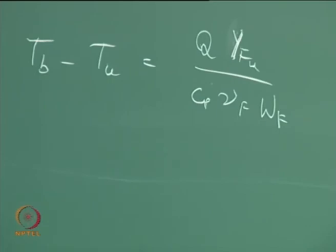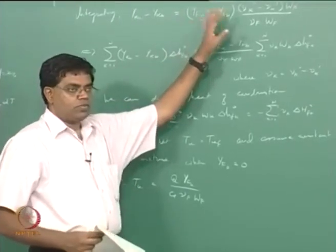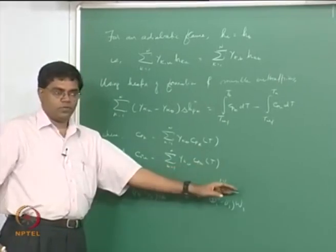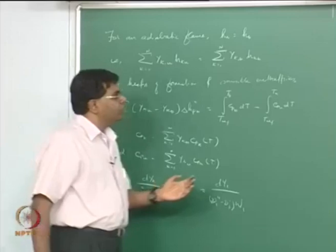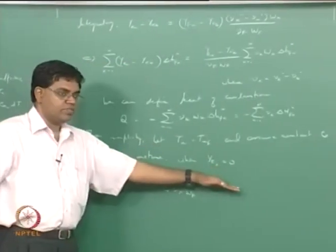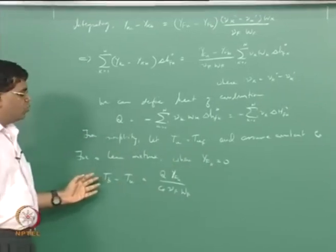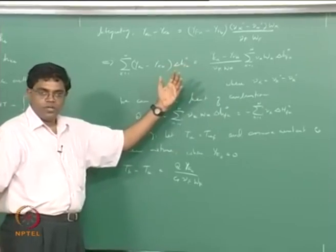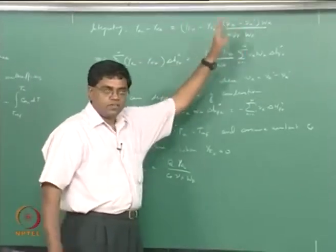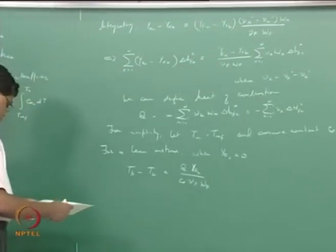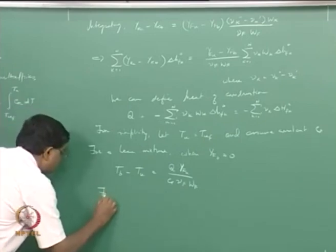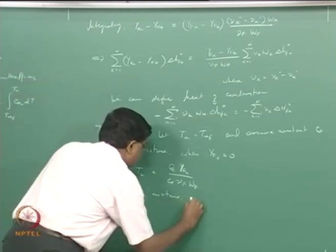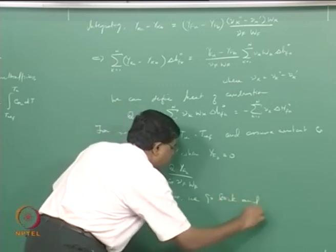We chose fuel as one side of the equation because for a lean mixture we substitute y_{fb} = 0. For a rich mixture, we instead substitute y_{O2,b} = 0, which means we need to integrate using oxidizer as the reference species rather than fuel.